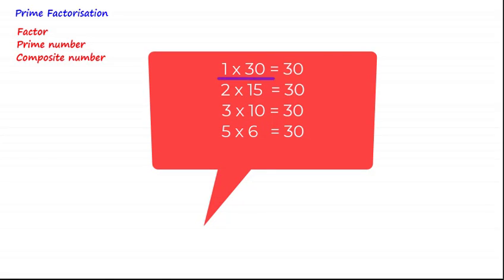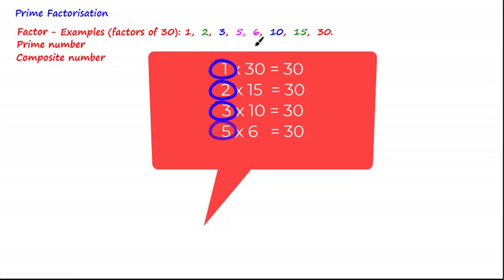1 times 30 is equal to 30. 2 times 15 is equal to 30. 3 times 10 is equal to 30. And 5 times 6 is equal to 30. So as these are whole numbers that we need to multiply to get the number 30, it follows that the factors of 30 are 1, 2, 3, 5, 6, 10, 15 and 30.